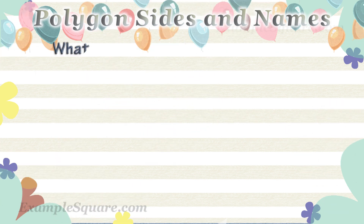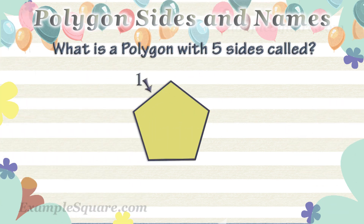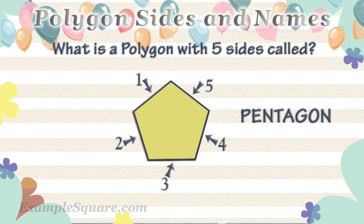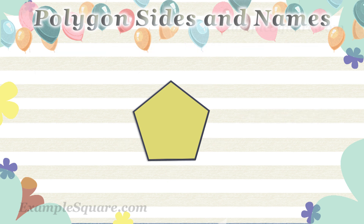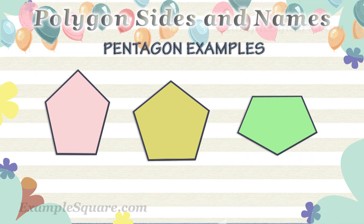What is a polygon with 4 sides called? A polygon with 5 sides is called a pentagon. These are some examples of pentagons.